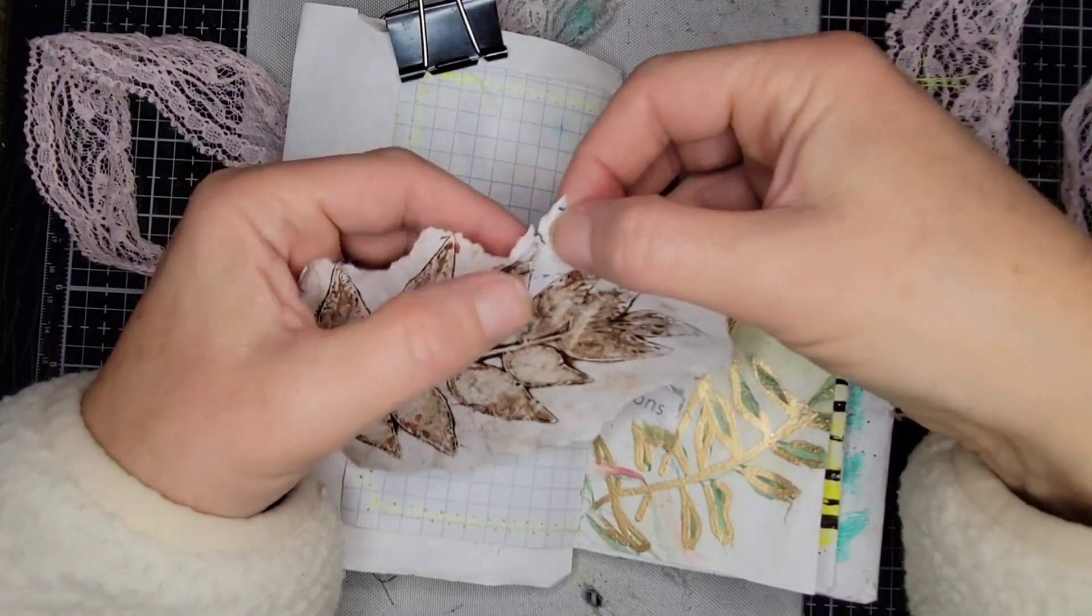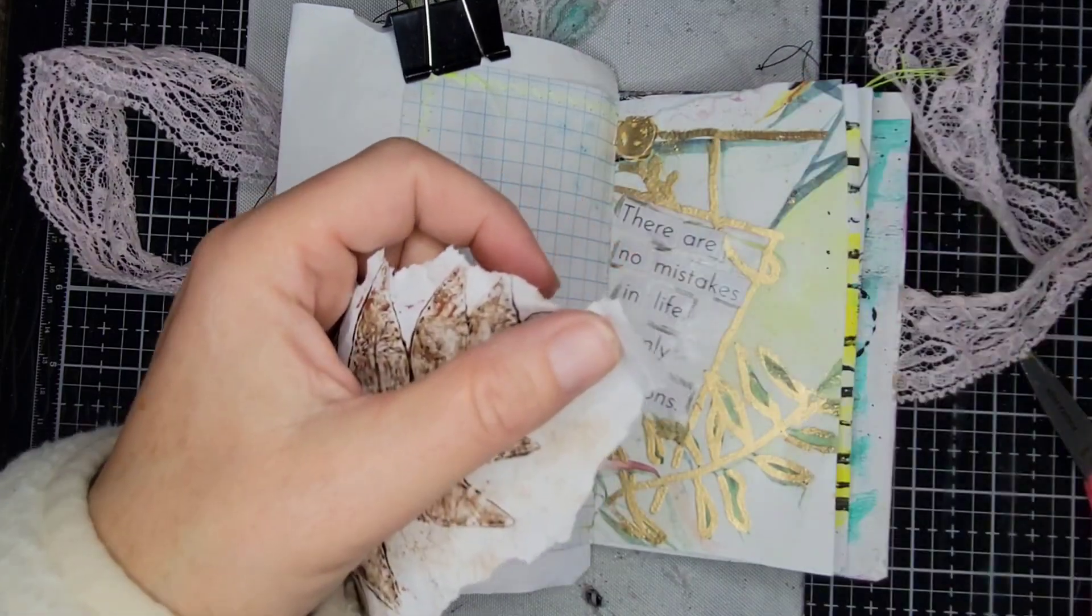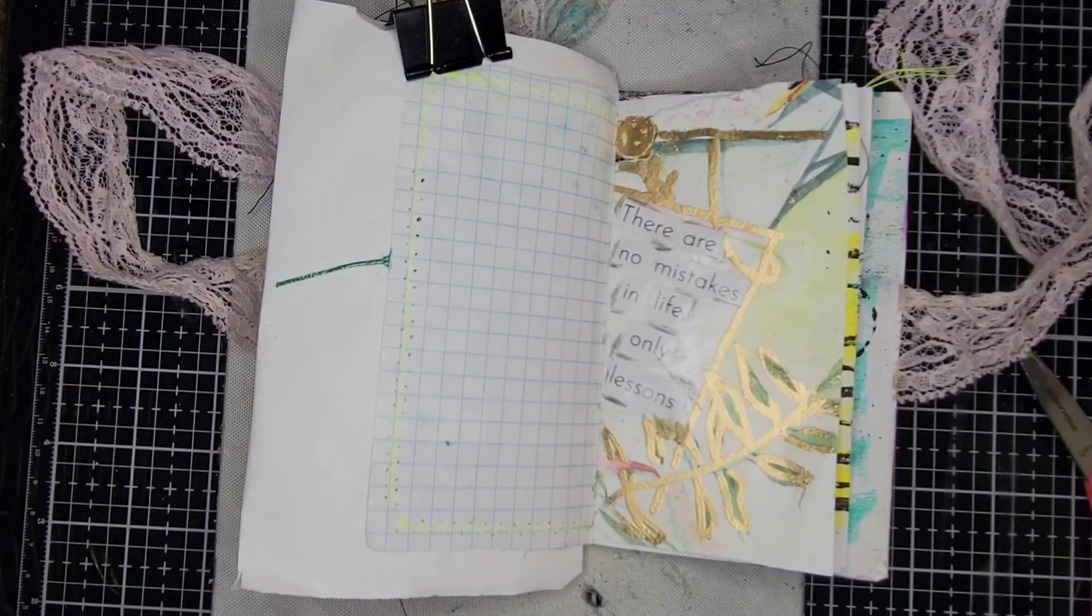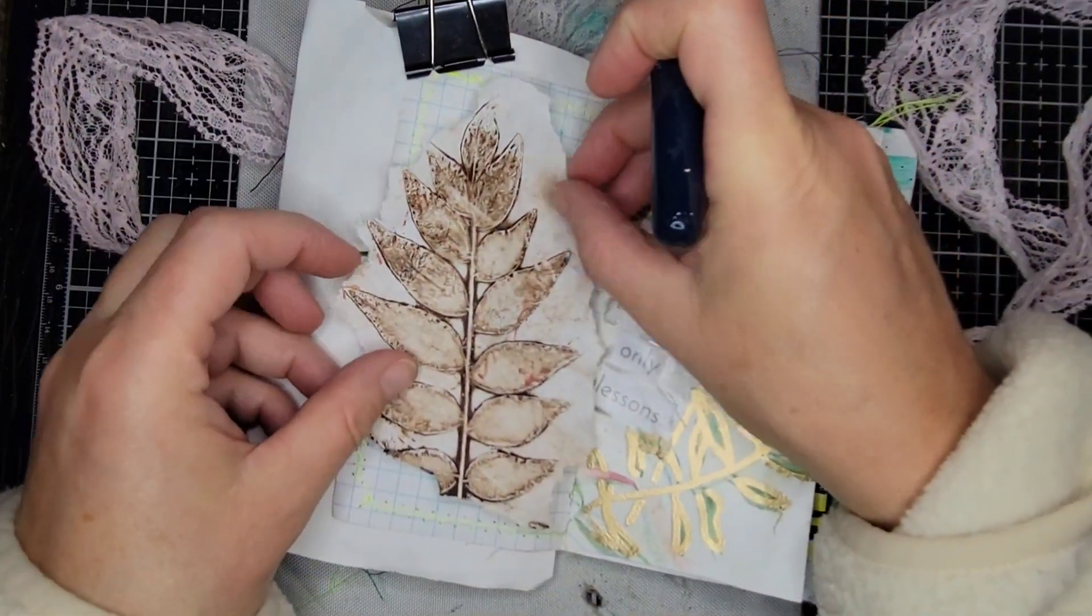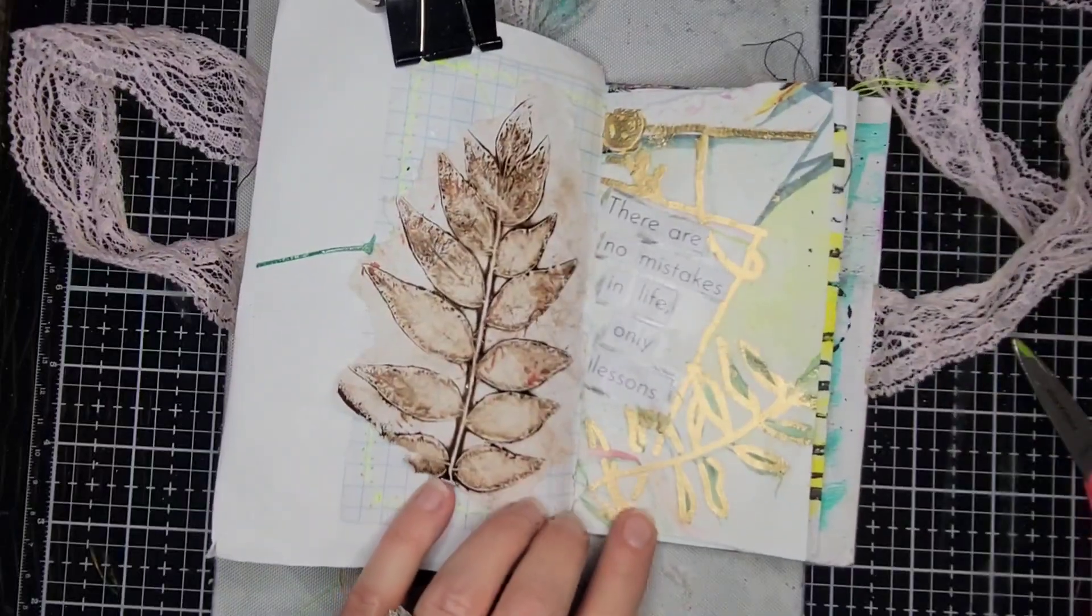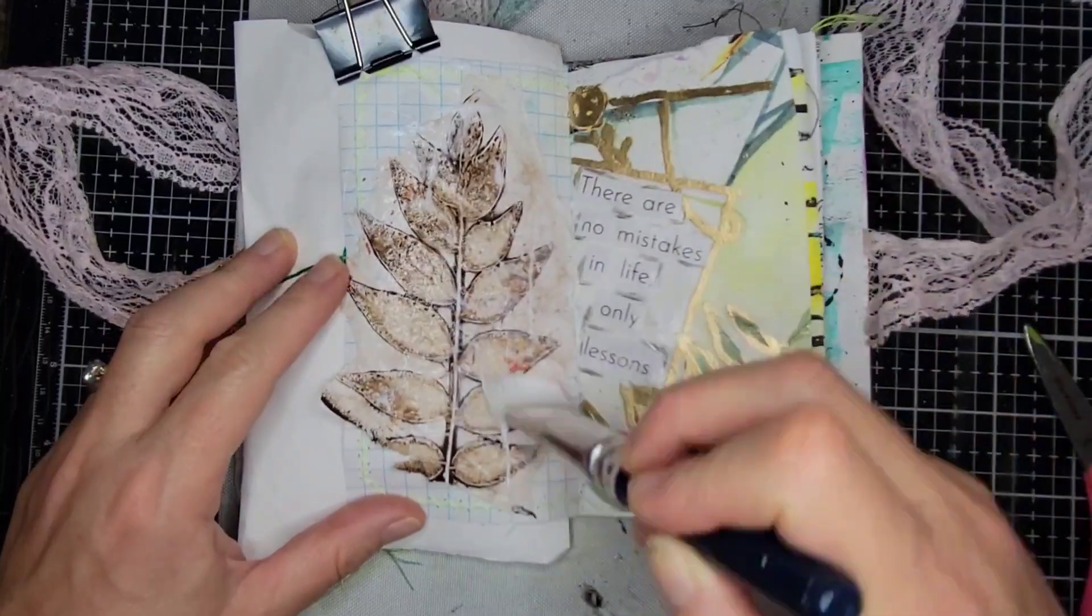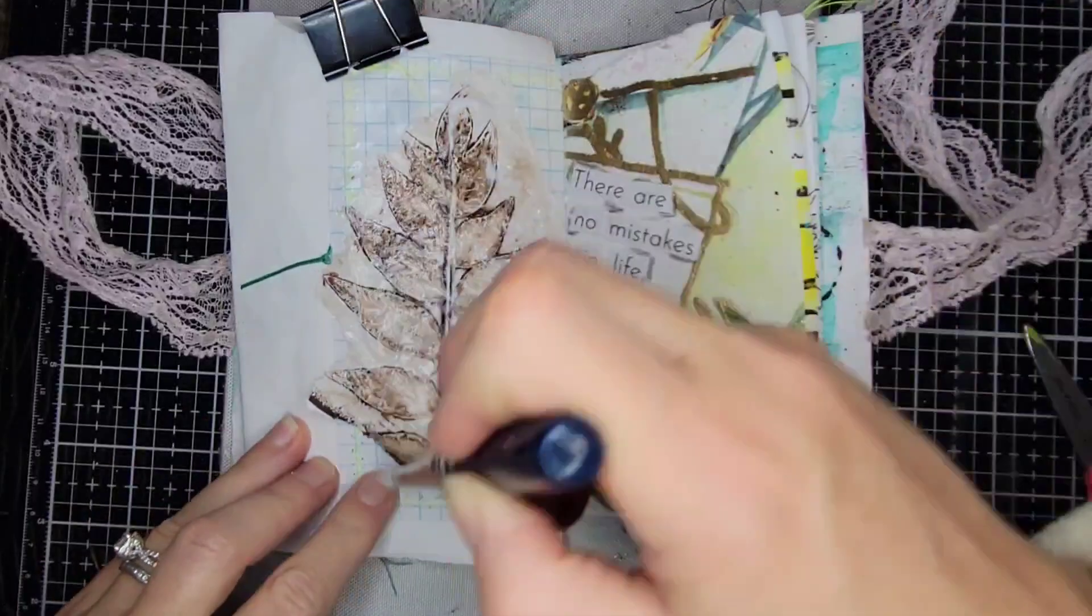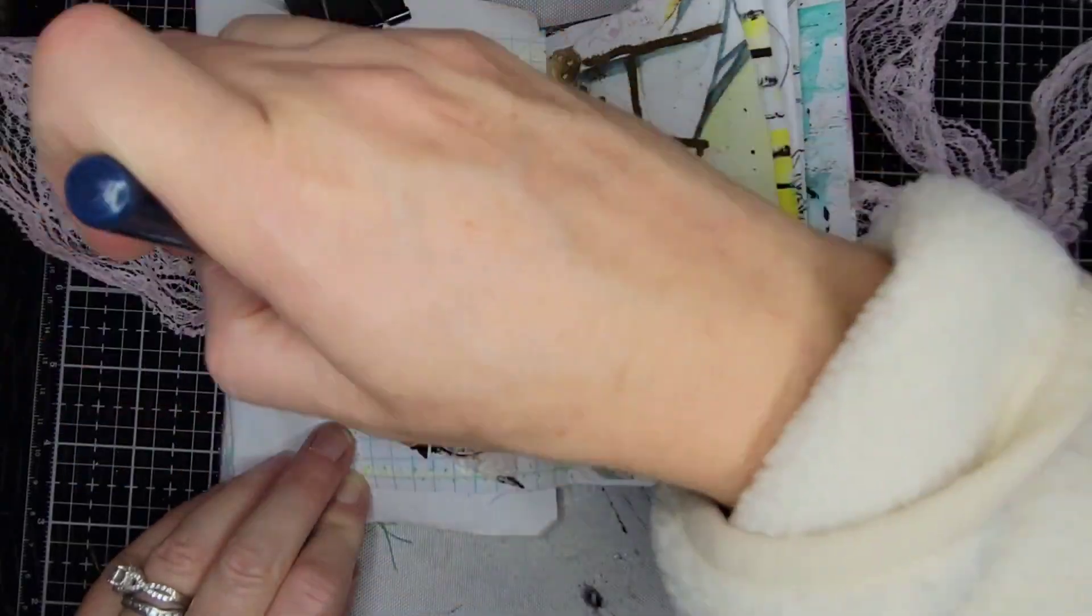So just gently kind of framing out the leaf, the part that I wanted to put onto the page. Again just using some Mod Podge, just the matte gel Mod Podge. You can use glue, you can use matte medium for this also. And I found one of these like silicone brushes that I absolutely love to use when I'm putting down, using the Mod Podge.